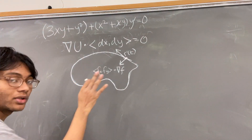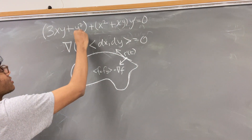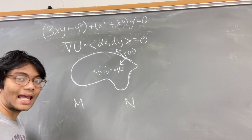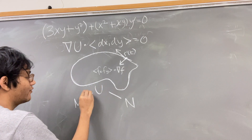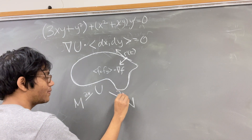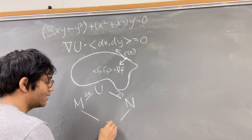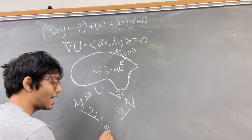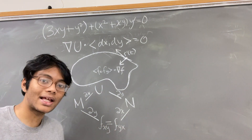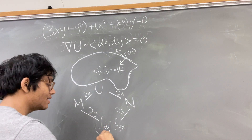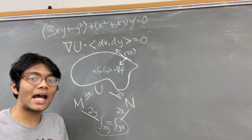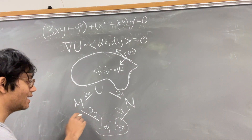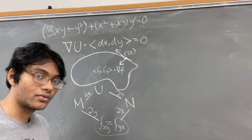With most exact differential equations you'll have an M term and an N term. These M and N terms are simply the partial derivatives of some potential function u with respect to x and y. If we take the partial of M with respect to y and the partial of N with respect to x, we get mixed partials f_xy and f_yx. From Calculus 3 we know mixed partials should be equal — so if M_y equals N_x, we have an exact differential equation.